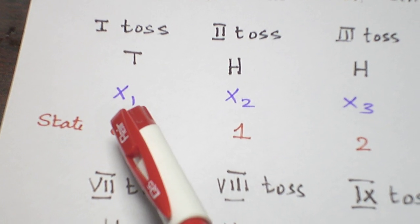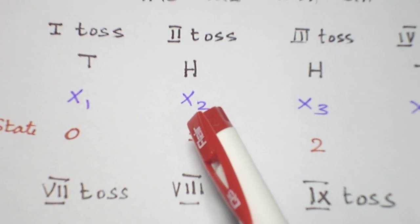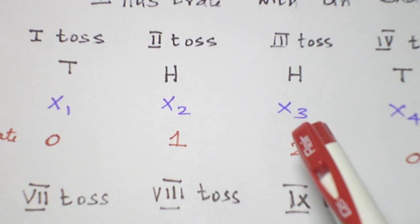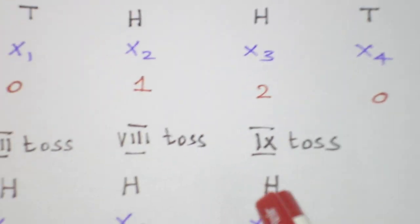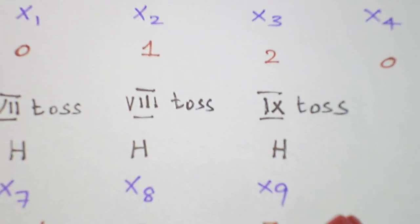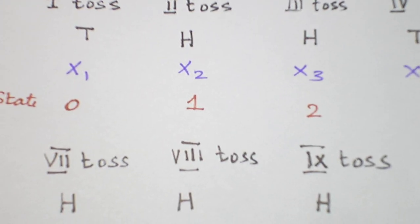The first toss gives the value of X1, second toss gives the value of X2, X3, X4, and so on. The ninth toss gives the value of X9.